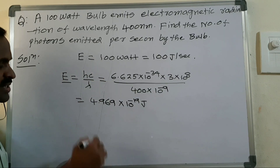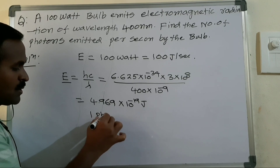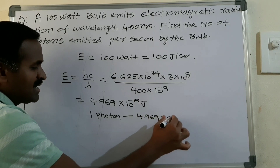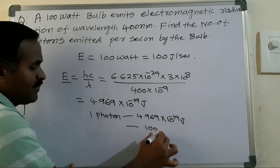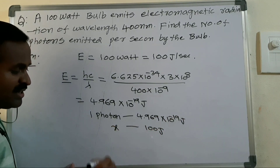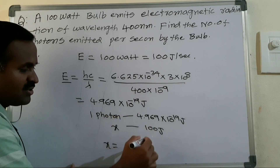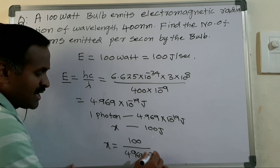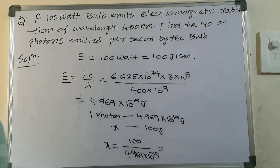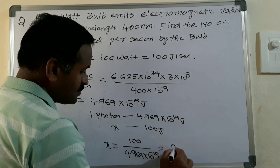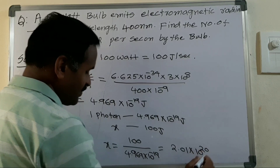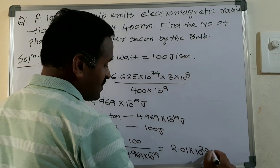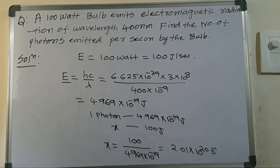One photon has energy 4.969 into 10 power minus 19 joules. The bulb emits 100 joules per second. Number of photons x equals 100 divided by 4.969 into 10 power minus 19. After simplification you will get 2.01 into 10 power 20 photons per second.